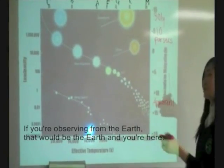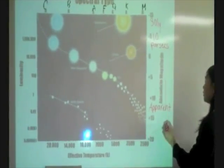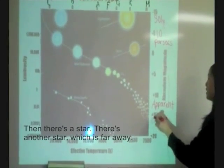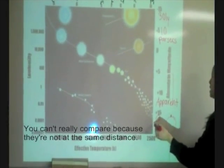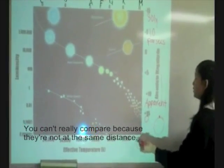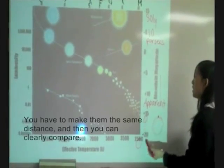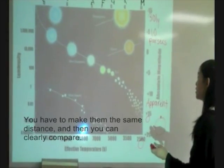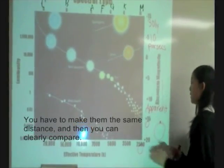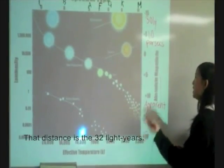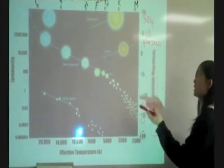So if you're observing from the Earth, and then there's a star and then there's another star which is far away, you can't really compare because they're not at the same distance. So you have to make them the same distance, and then you can clearly compare. And then that distance is the 30 something light years.